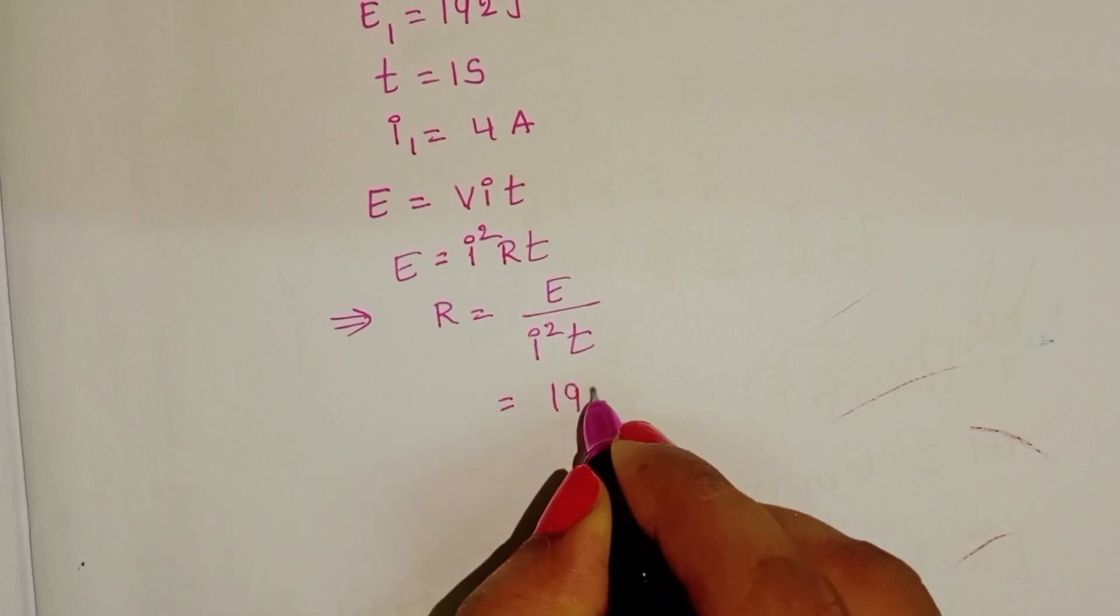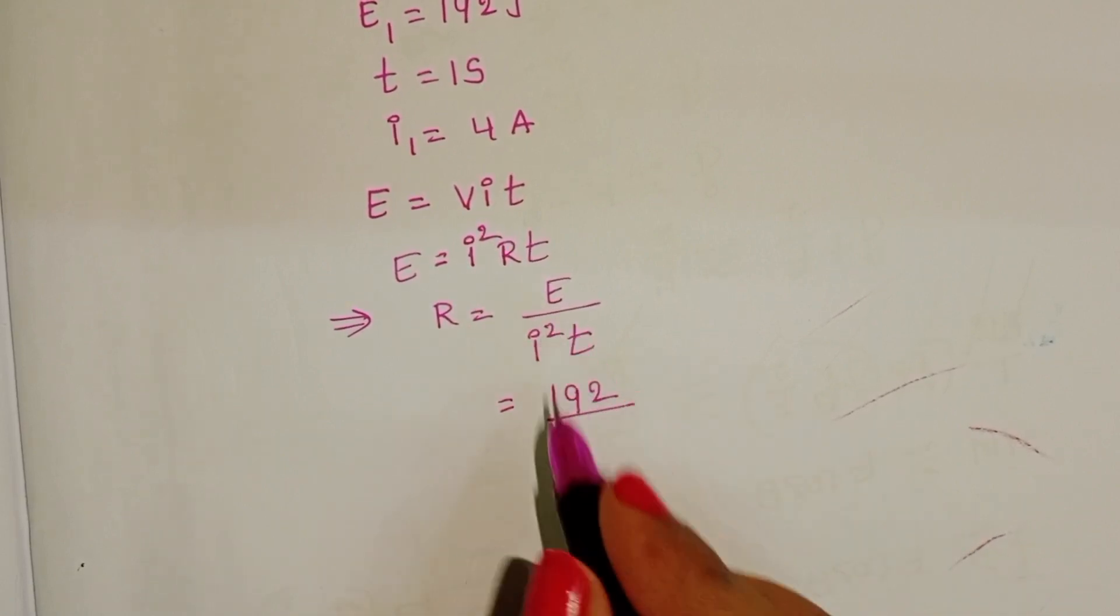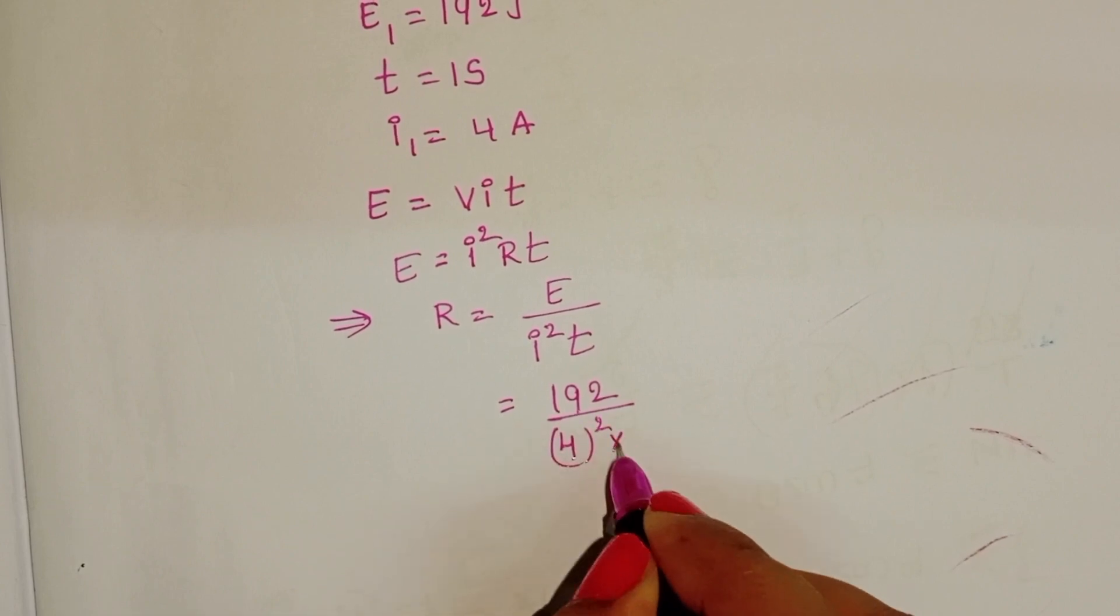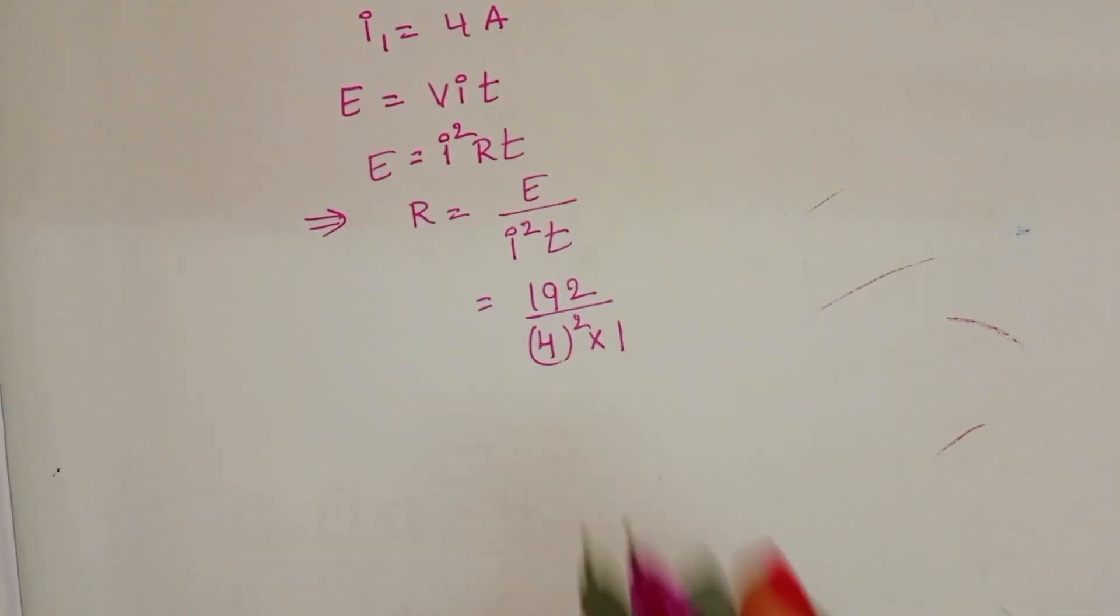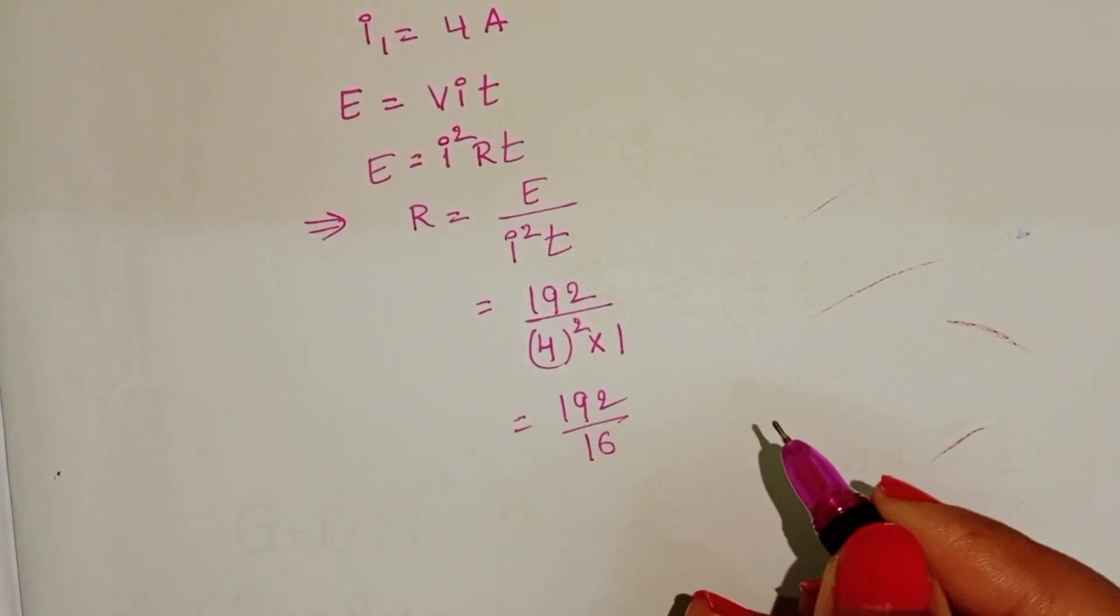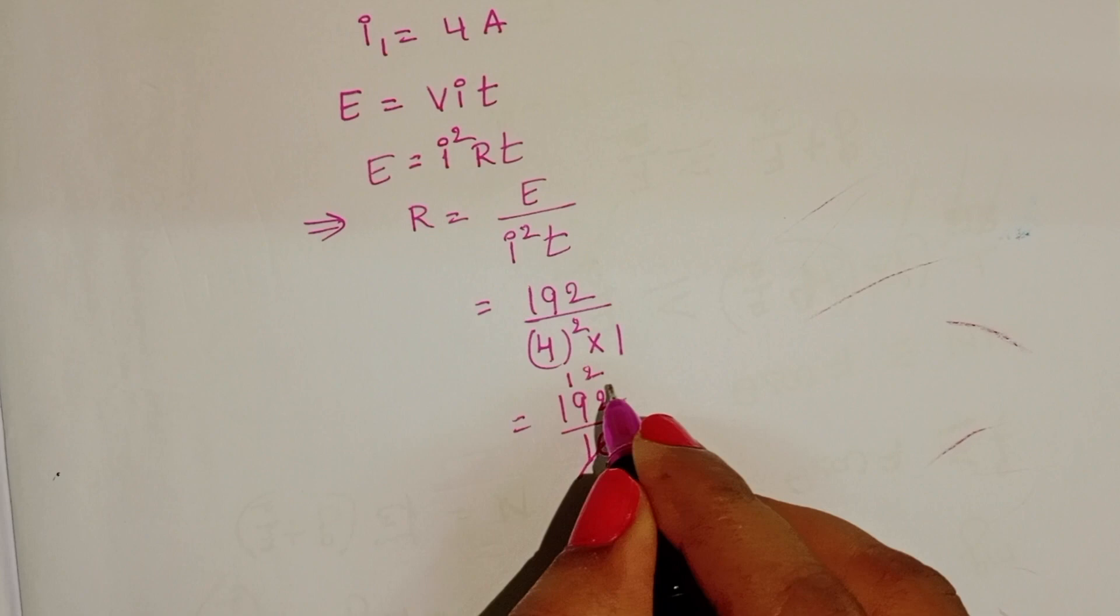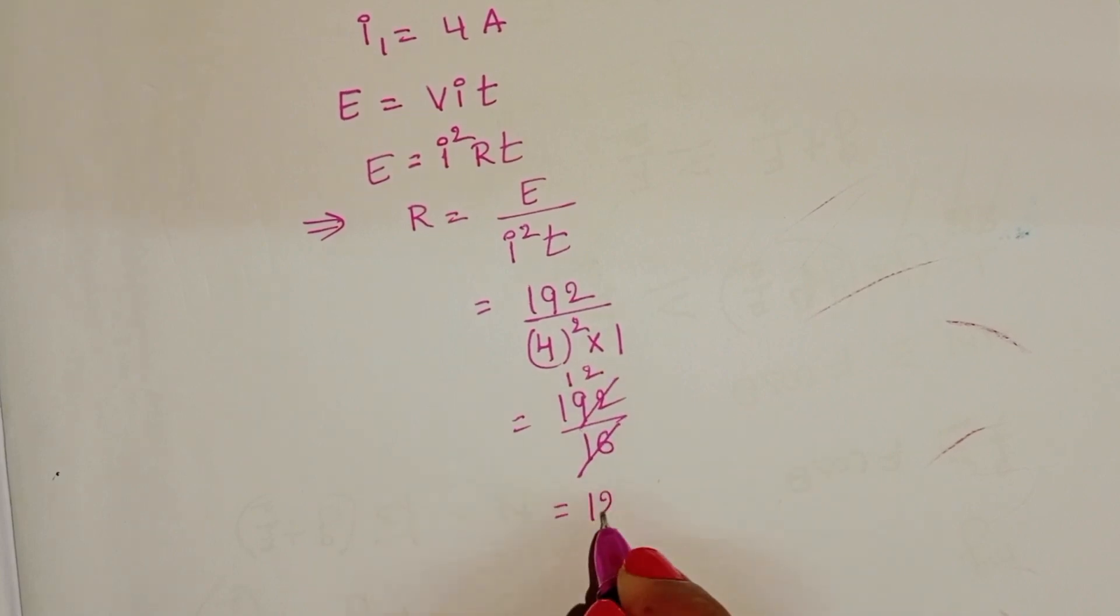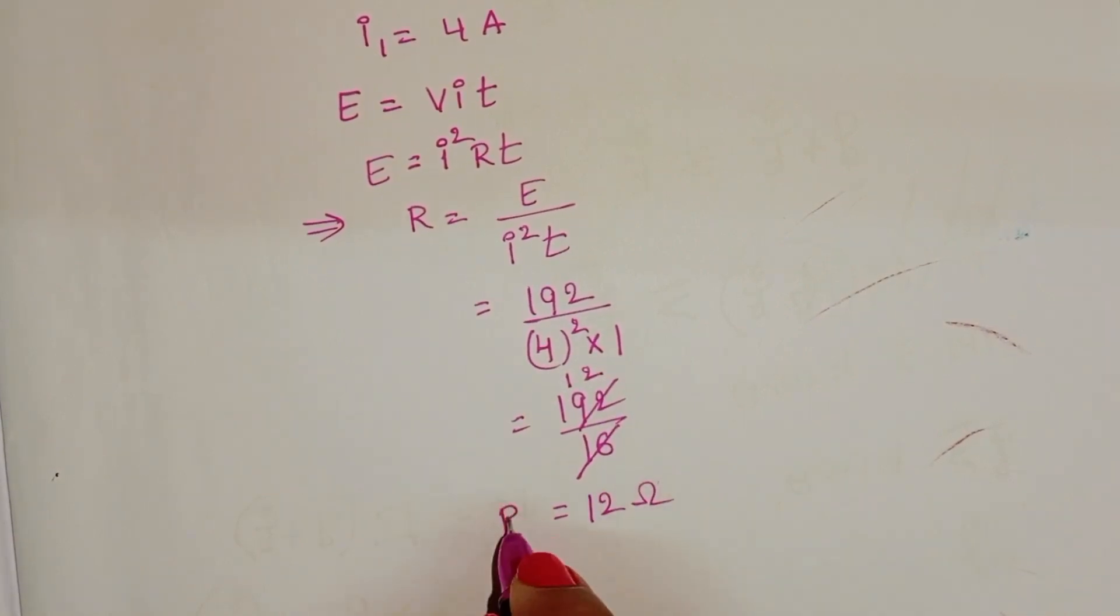Here energy is 192 joules, current is 4 amperes, 4 whole squared into time is 1 second. Then 192 by 16, 16 ones and 16 twos. Resistance is 12 ohm.